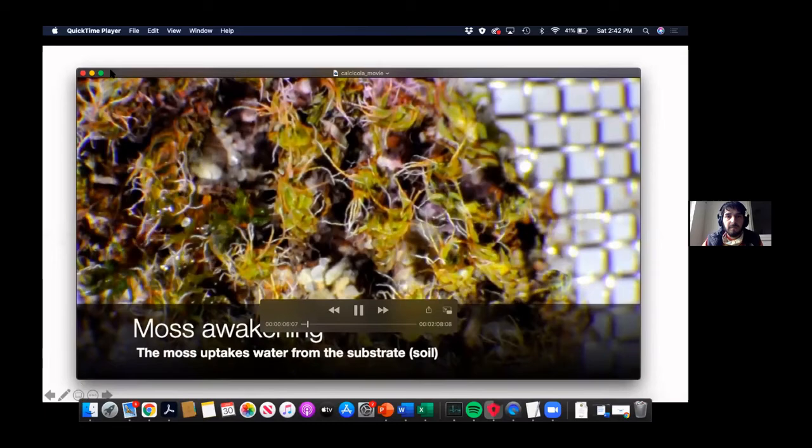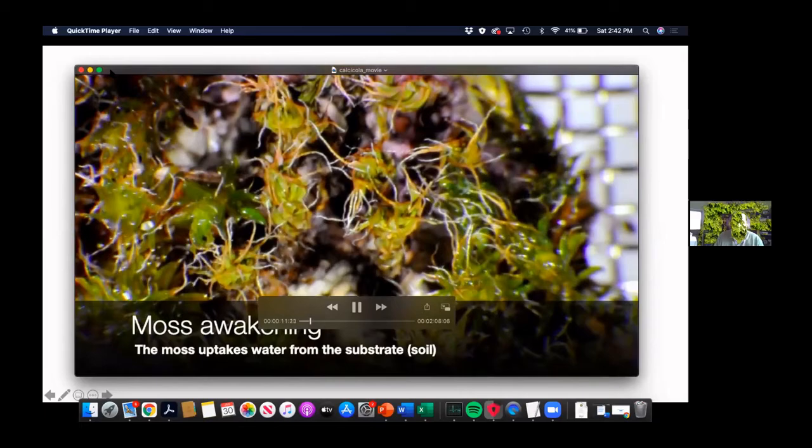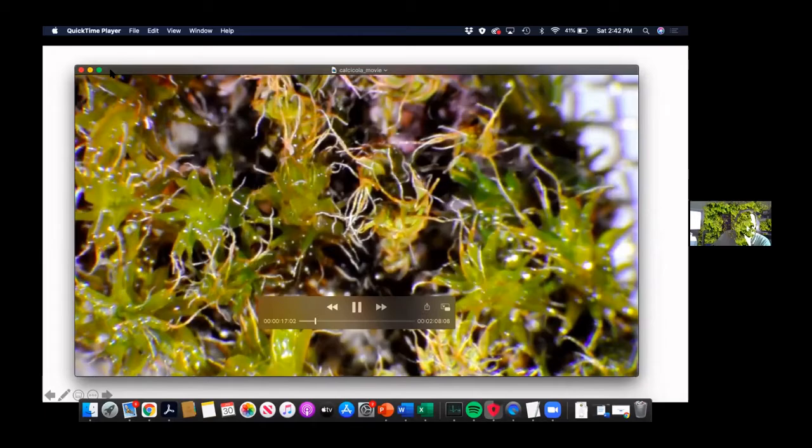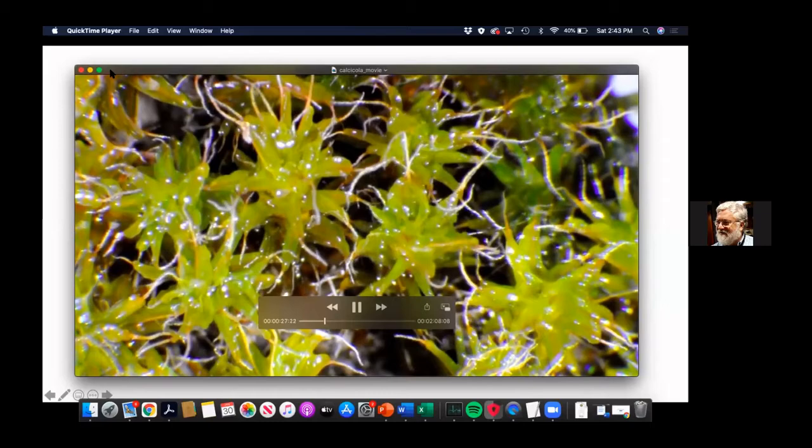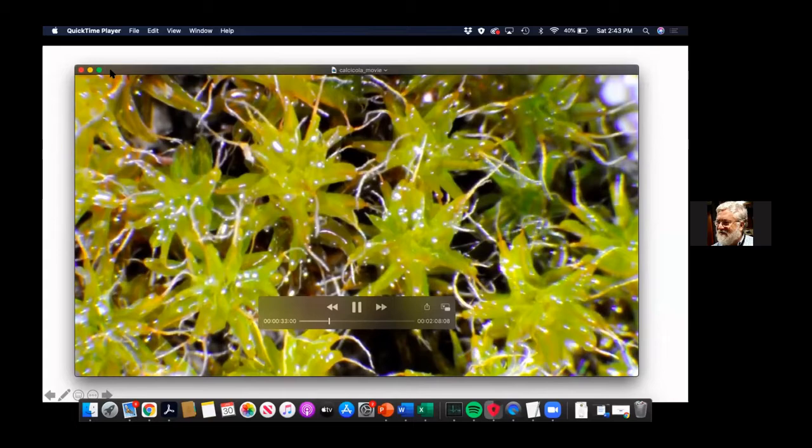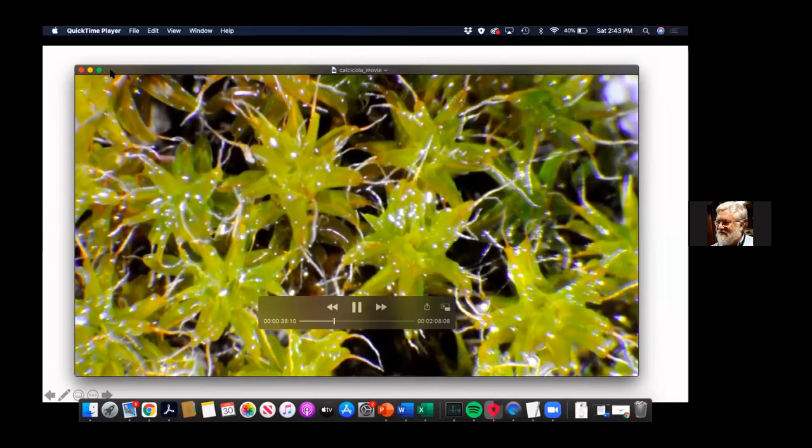So here's the water coming from the bottom, and the moss uptakes this water very easily, as you can see. Usually what is happening is that there is a fast refilling through the stem that goes to the bottom, but after the water, it gets distributed along the surface of the leaf. I'm going to show you a video that shows that.